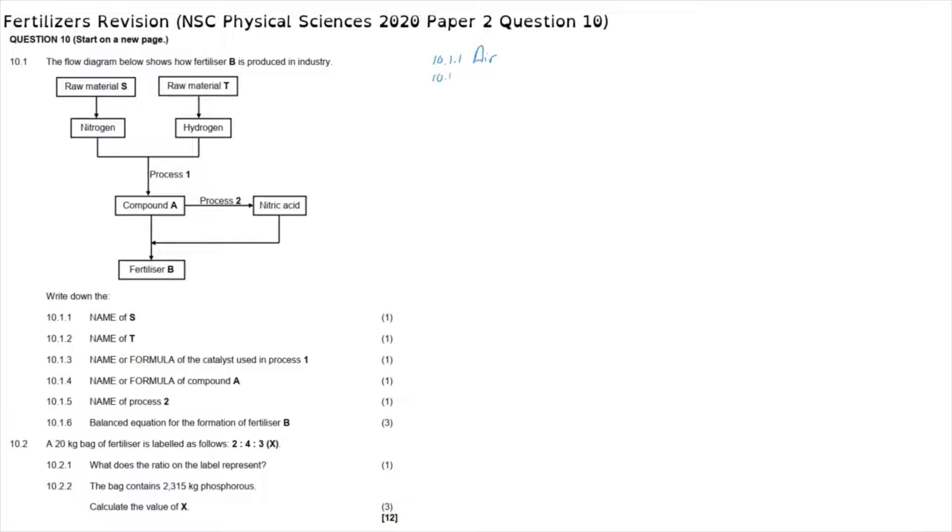Question 10.1.2 asks us to write down the name of raw material T, where the hydrogen is obtained from. That is most commonly found in some form of natural gas.